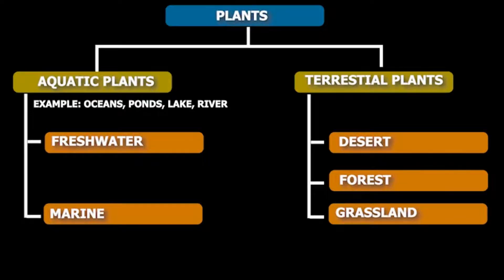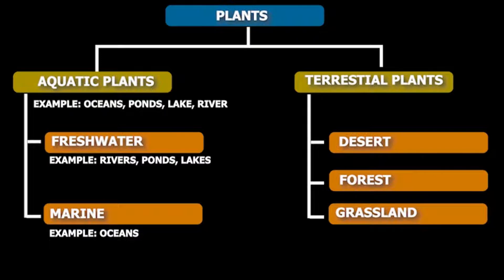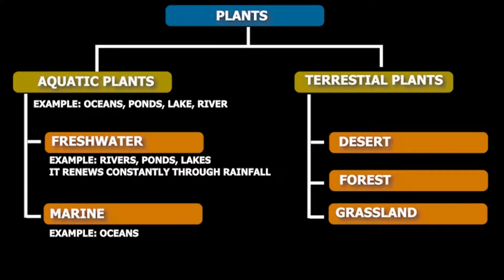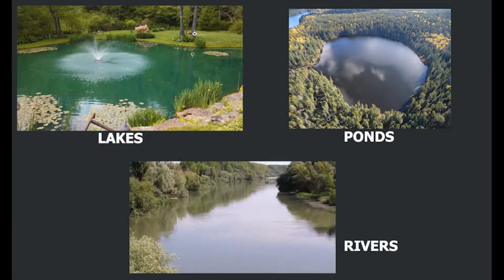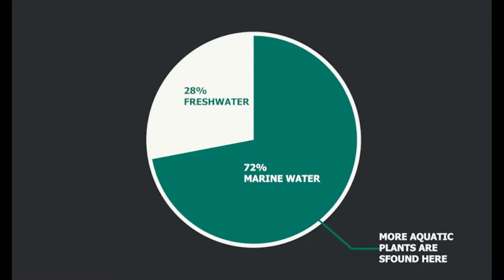One type is marine water, which is found in oceans, and the other is fresh water, which is found in ponds, rivers, and lakes. Fresh water is called fresh water because it renews constantly through rain. Salt water contains a lot of salt and is not usable for drinking. Oceans are examples of marine habitat, while rivers and lakes are examples of fresh water habitat. Water covers around 72 percent of the total area of Earth.